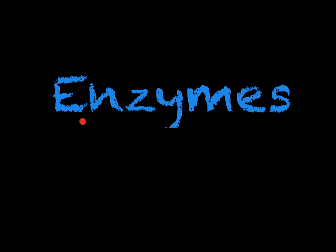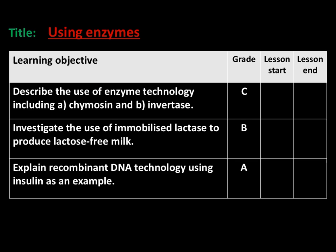This is the 11th video in the B3 revision tutorial series. In this video we will look over enzymes and how they are used in industry, including restriction enzymes. We will cover enzyme technology including chymosin and invertase, how to use immobilised lactase to produce lactose free milk, and finally recombinant DNA technology using insulin as an example.